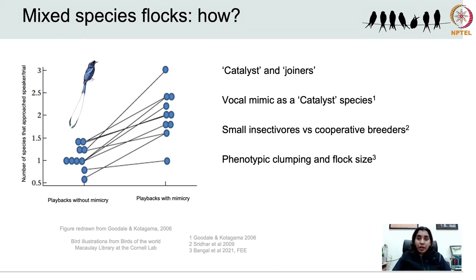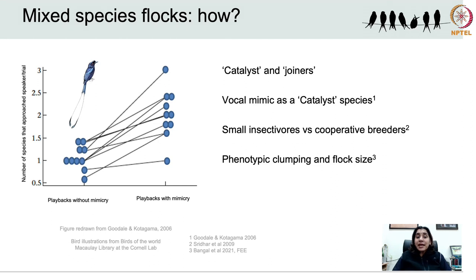Some species in such flocks are called catalyst species — these are flock initiators that also play a key role in flock maintenance, whereas those that join subsequently are called joiners. Eben Goodale and Sarat Kotagama studied mixed species flocks in Sri Lankan birds and found that the greater racket-tail drongo, a known vocal mimic, initiates mixed species flocks. To understand how initiation is mediated by the drongo, they conducted playback experiments using two kinds of stimuli: one including the song mimicry of the greater racket-tail drongo, and one lacking it. They found that playback including the song mimicry was more than twice as attractive to birds of other species.